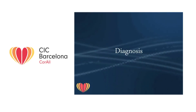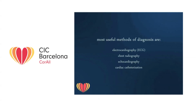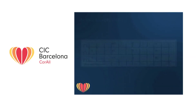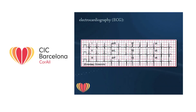The most useful methods of diagnosis are electrocardiography (ECG), chest radiography, echocardiography, and cardiac catheterization. Electrocardiography of the atrioventricular canal defect usually presents right ventricular hypertrophy and left axis deviation.